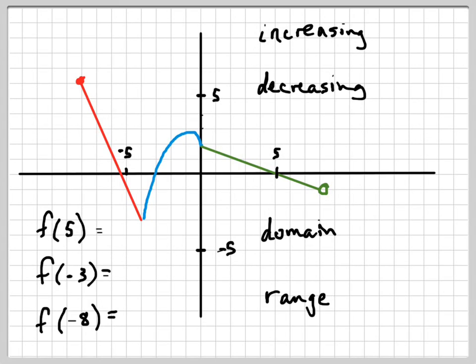So this is a piecewise function, and you can see I color-coded it. Usually your book won't give it to you color-coded, but I did it so you can see how you have to visualize it. There are three different pieces: the red piece, the blue piece, and the green piece. What they want us to do for this problem is find the increasing and decreasing intervals, the domain and range, and function values. Let's start with the easiest thing, which is just the function values.